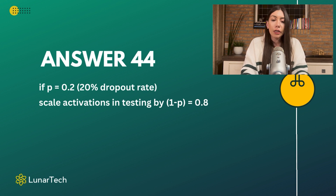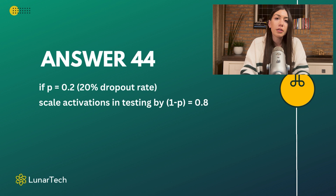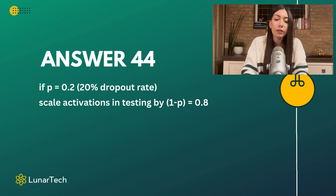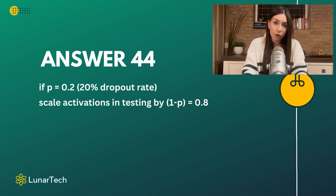Just as an example, if the dropout rate is 20%, so 0.2, this means that during the training process the neurons have an 80% probability of being activated and a 20% chance of not being activated. It means that during testing, we need to scale the activations by 0.8, so 1-p.